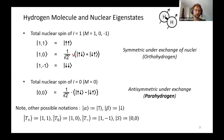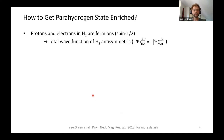I quickly want to note other notations frequently used: spin-up is referred to as alpha, spin-down as beta. The triplet states are often called T-plus for the |1,1⟩ state, T-zero, and T-minus, and the singlet state is referred to as the S state. So we have the question: how do we get this parahydrogen state enriched?